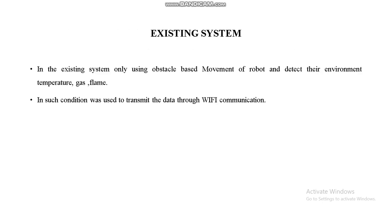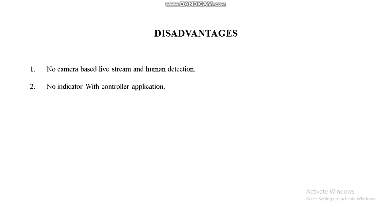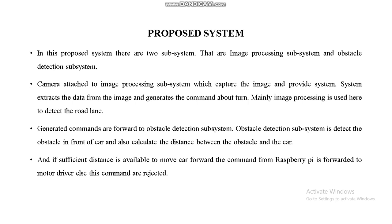The existing system only uses obstacle-based movement of the robot and detects environment parameters such as temperature and gas flame. That data is transferred through Wi-Fi communication to cloud storage. The disadvantage is there is no camera-based live stream and no human detection, and no indicator with controller applications. In our proposed system, a camera is attached to the image processing subsystem, which captures images and provides them to our system.